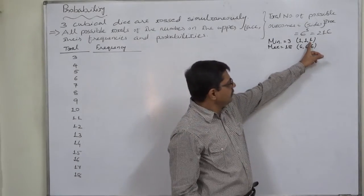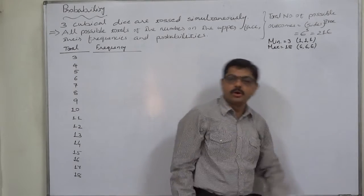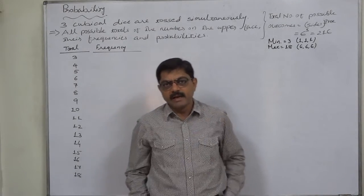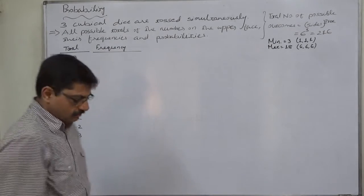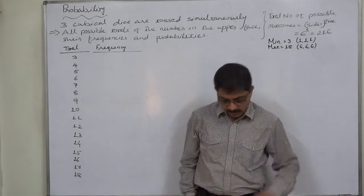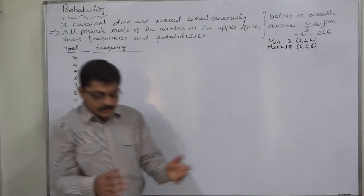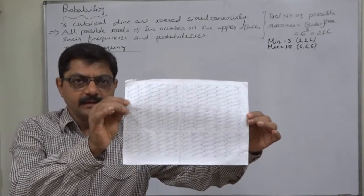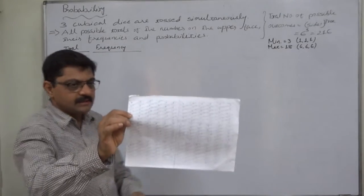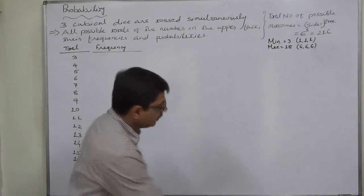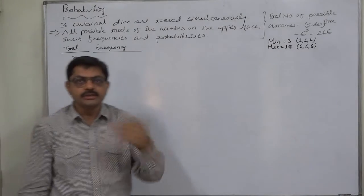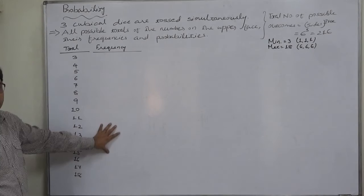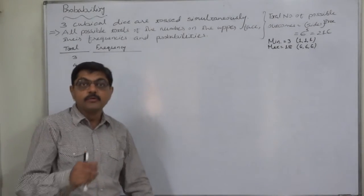The minimum total in the first column will be three and maximum will be one plus one plus six, so eight. The minimum total will increase by one in each column and maximum total will also increase by one in each column. Now, I am going to suggest a pattern of frequency so that even if you forget at the time of your examination, you can write all the frequencies in a minute or less if you learn the pattern carefully.